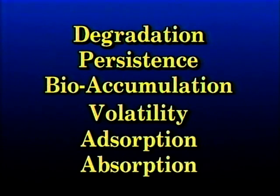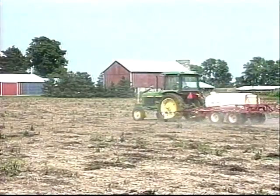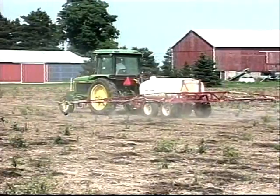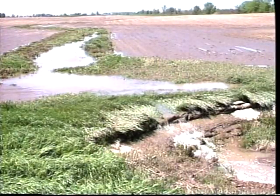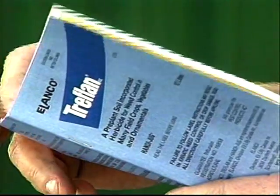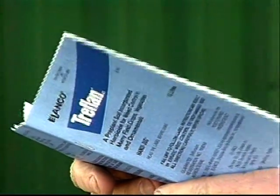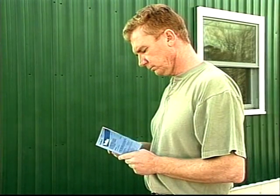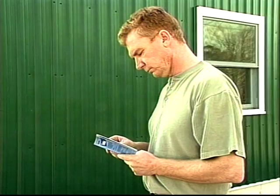Consider these six properties before you use a pesticide. The fate of pesticides in the environment is not determined by a single property, but by a combination of properties. The movement of pesticides in the environment is very complex, through the natural processes of drift, surface runoff, leaching, and soil erosion. Go to the pesticide label for information on application procedures to reduce the movement of pesticides in the environment.